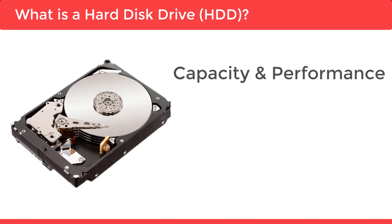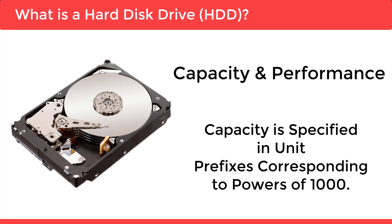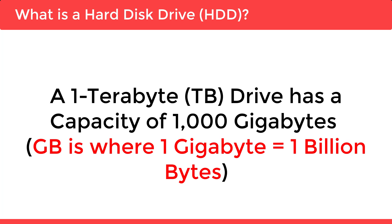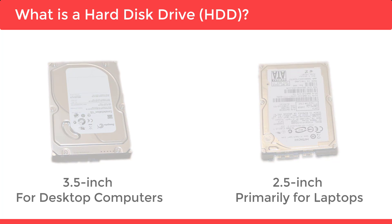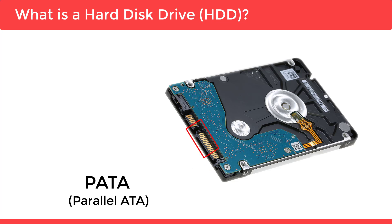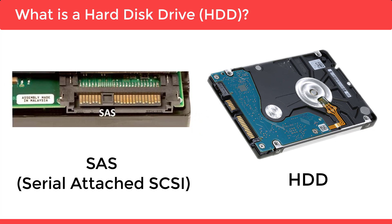The primary characteristics of an HDD are its capacity and performance. Capacity is specified in unit prefixes corresponding to powers of 1000; a 1TB drive has a capacity of 1000 GB, where 1 GB equals 1 billion bytes. The two most common form factors are 3.5 inch for desktop computers and 2.5 inch primarily for laptops. HDDs are connected to systems by standard interface cables such as PATA, FireWire ATA, SATA (Serial ATA), USB, or SAS (Serial Attached SCSI) cables.